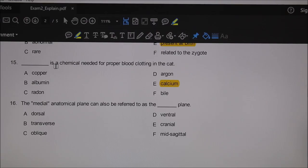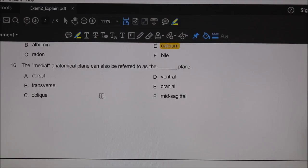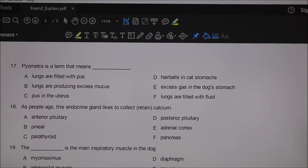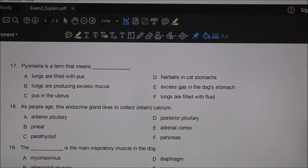Fifteen: calcium is the chemical needed for proper blood clotting in the cat. Sixteen: the medial anatomical plane can also be referred to as the blank plane. Look in your notes from February 6th. Coach Rochelle keeps notes on everything we do in class.